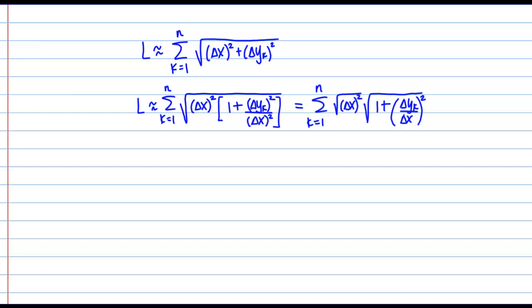Now I can make a simplification because I have the square root of delta x squared. Technically, this reduces to the absolute value of delta x, but since delta x is always positive anyway, I don't need to include those absolute value symbols. So then I get the sum of delta x times the square root of 1 plus the quantity delta y sub k over delta x squared.